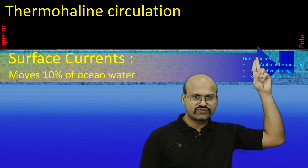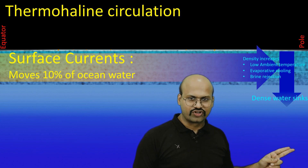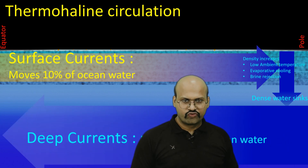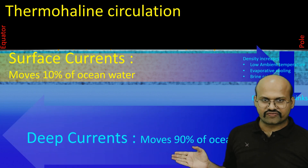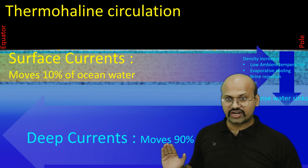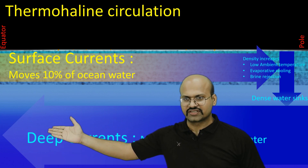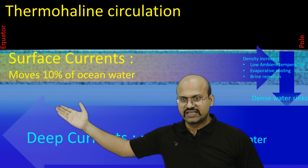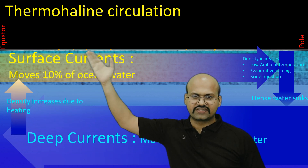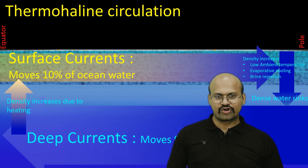Dense water sinks to the deeper parts of the ocean. Deep currents carry almost 90% of the ocean water, and they are very slow. They carry the water back to the equatorial region, where heating from the sun decreases the density and the water rises up to the surface again. This is the basic cycle of thermohaline circulation.